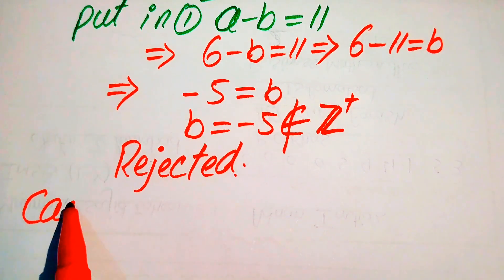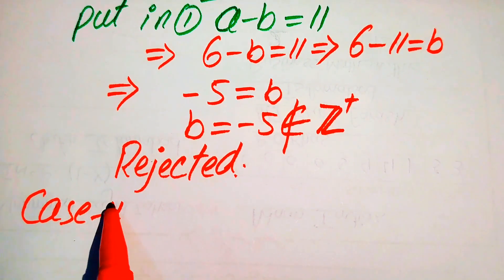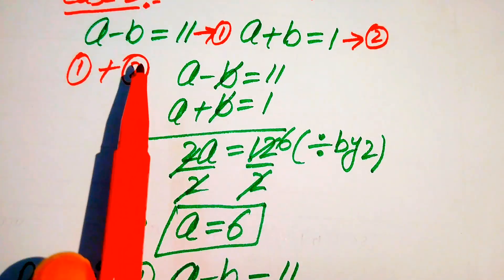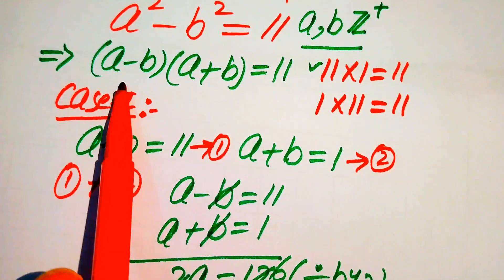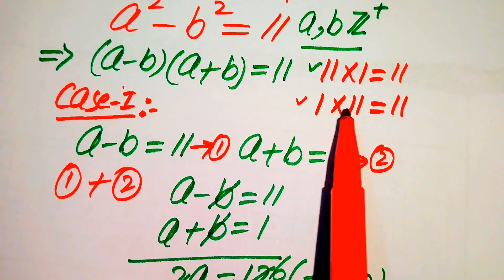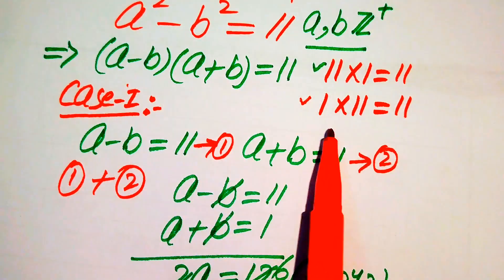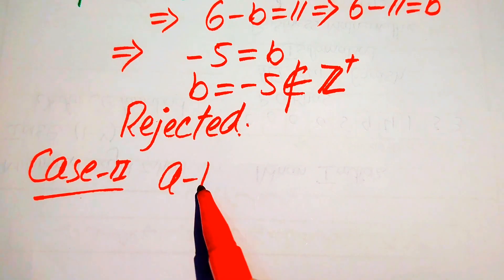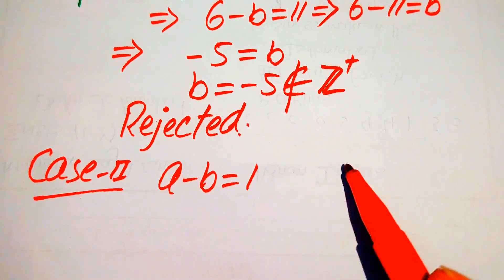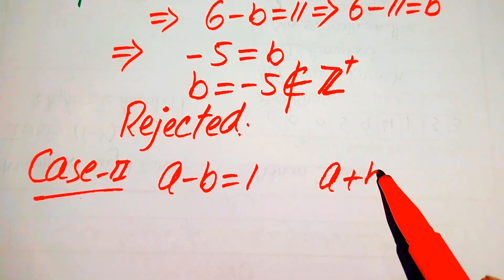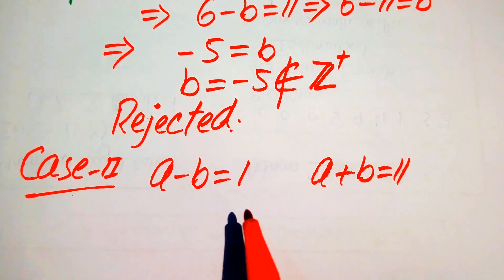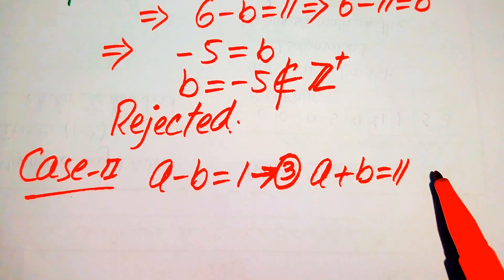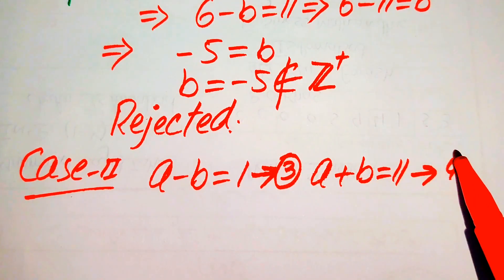Now we write Case 2, where we compare the two factors with the values 1 and 11 in the opposite order. We get a minus b equals 1 and a plus b equals 11. We call these equation number 3 and equation number 4.